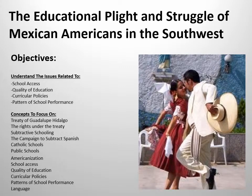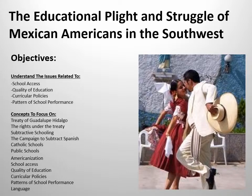This is another video, or PowerPoint with audio, trying to clarify some points from the reading. I would suggest you pay attention to the subtitled sections in the reading: school access, quality of education, curricular policies, and patterns of school performance. Each of those areas has a few key points that are important to know. I'll also introduce you to the Treaty of Guadalupe Hidalgo, talk about additive and subtractive schooling, and some of the policy.